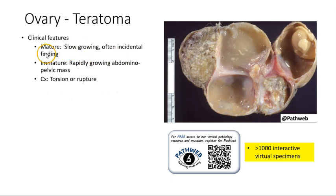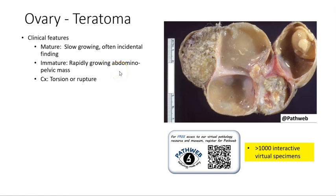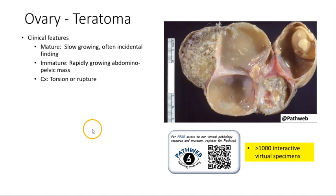Clinically, the mature cystic teratomas are usually slow-growing, and therefore they often are asymptomatic, so they are discovered on incidental imaging. The immature teratomas grow more rapidly and can present as an abdominopelvic mass. Some complications include torsion and rupture, which could lead to acute abdomen as well as severe pain.